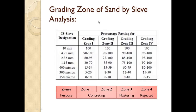Now in this lecture we are going to discuss the grading zone of sand by sieve analysis. Gradation refers to the particle size distribution of aggregates. Grading is a very important property of aggregates used for making concrete, in view of its packing of particles resulting in the reduction of voids. This in turn influences the water demand and cement content of concrete. Grading is described in terms of cumulative percentage of weight passing a particular sieve, referring to IS 383:1970.